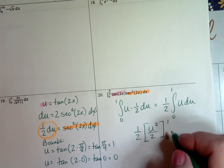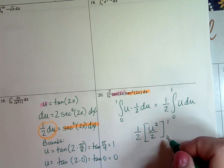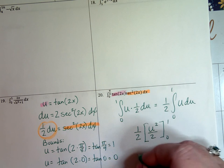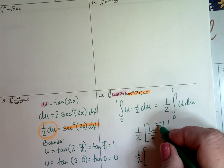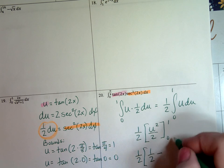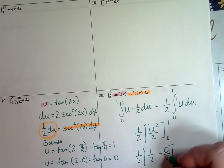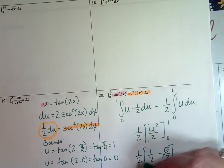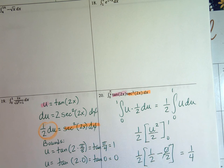So now I'm going to f of b minus f of a. I'm going to plug a 1 in. I'm going to plug a 0 in and I'm going to subtract them. Plug a 1 in. 1 squared is 1. 1 divided by 2. Minus. Put a 0 in. Well that's just 0 so you can forget about that guy. ½ times ½ gives me ¼. And that is your answer to number 20.